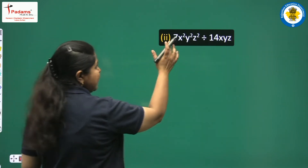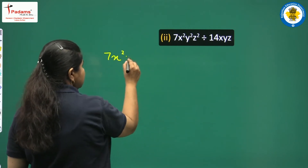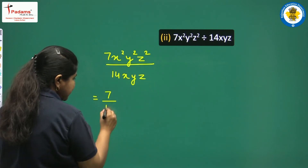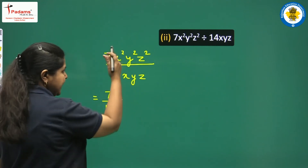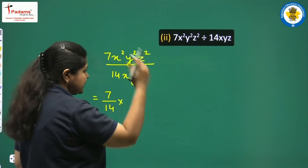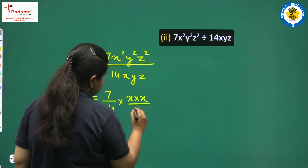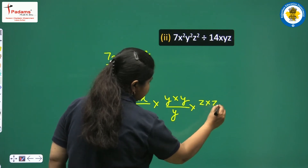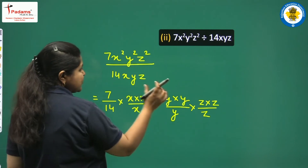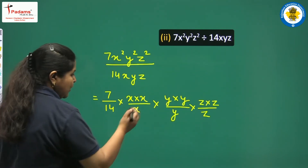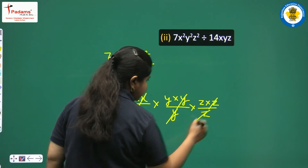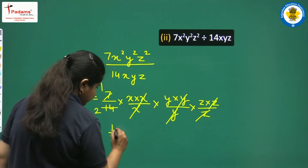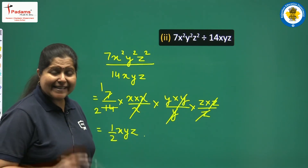Next: divide 7x²y²z² by 14xyz. Numerical coefficients: 7 upon 14 = 1/2. Like variables: x² upon x gives x; y² upon y gives y; z² upon z gives z. Expanding: x into x upon x, y into y upon y, z into z upon z — cancel one of each. Answer is (1/2)xyz.